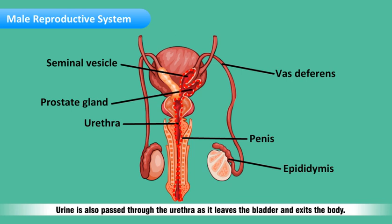Urethra: the urethra is a thin tube that carries semen to outside the body through the penis. Urine is also passed through the urethra as it leaves the bladder and exits the body.